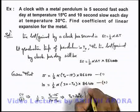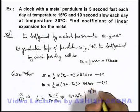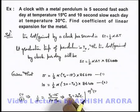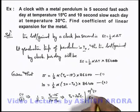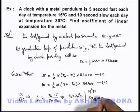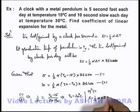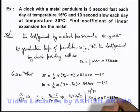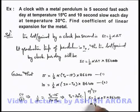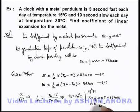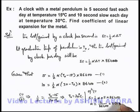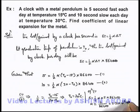Now, from this equation 1, if we substitute T₀ is equal to 20 degree centigrade, this will give us 5 is equal to half alpha multiplied by 20 minus 15 is 5 multiplied by 86400. That will give us the value of alpha to be equal to 2 by 86400, that is equal to 2.31 into 10 to power minus 5 per degree centigrade. That is the answer to this problem.